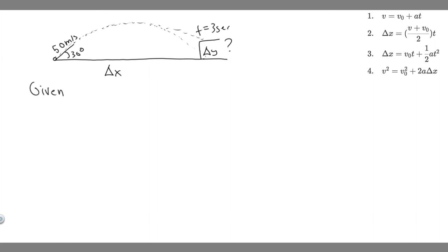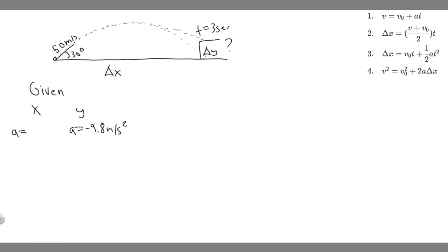For past problems you've done one-dimensional where you focus on one direction, but here you want to write out the variables you know in the x and y direction. In the y direction, acceleration is always minus 9.8 meters per second squared — this is gravity, which is downward so it's negative. In the x direction, unless specified differently, the acceleration is 0 meters per second squared because there's no acceleration in x.